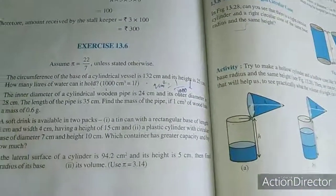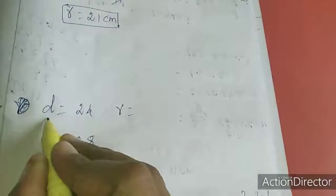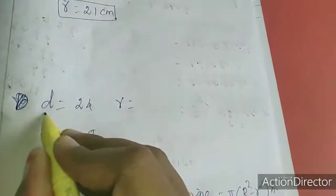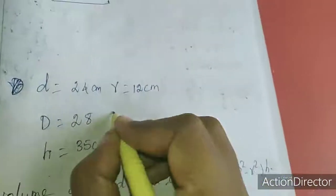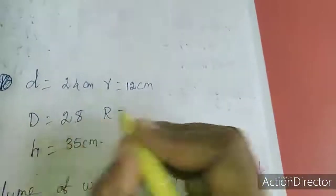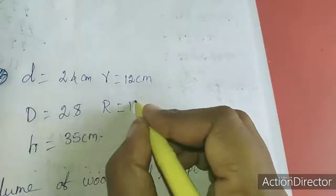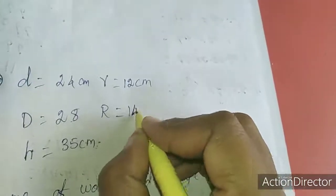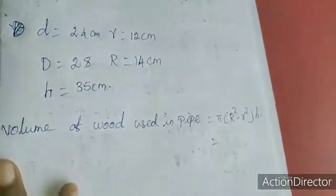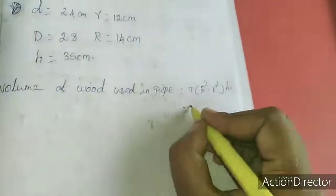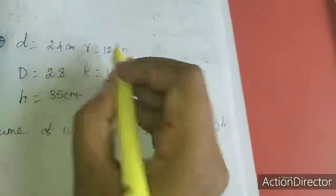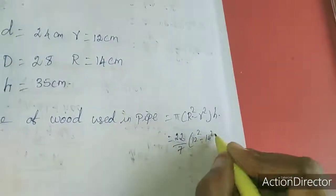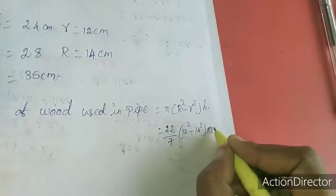The outer radius is 14 centimeters and inner radius is 12 centimeters. Height is 35 centimeters. Volume of the wooden pipe equals 22 by 7 times R squared minus r squared times 35.